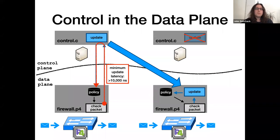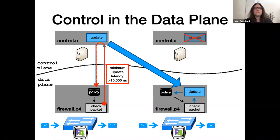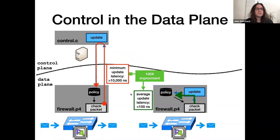Recently, data plane programs are increasingly integrating elements of network control right into the data plane itself. They're using features like register arrays, stateful ALUs, and packet recirculation to implement new data structures that can be updated locally from inside the ASICs, so there doesn't have to be a remote server in the control loop. The big benefit is basically orders of magnitude better performance, in terms of both update latency and throughput.